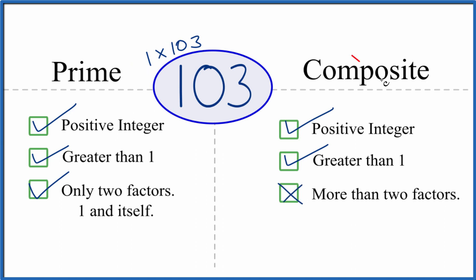So 103, that's not composite. In answer to our question, 103 is a prime number. This is Dr. B. Thanks for watching.